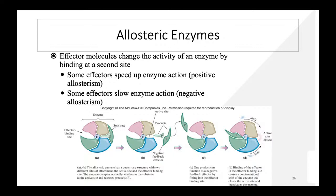Allosteric enzymes have effector molecules that change enzyme activity by binding at a second site (not the active site). When the substrate is attached to the enzyme, it makes products. One product can act as a negative feedback factor — it attaches to the effector site and closes the active site, so nothing can happen there.